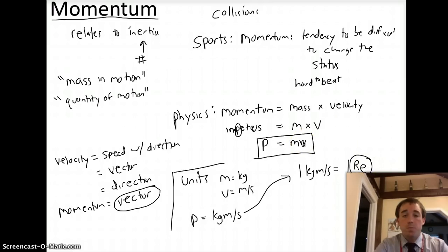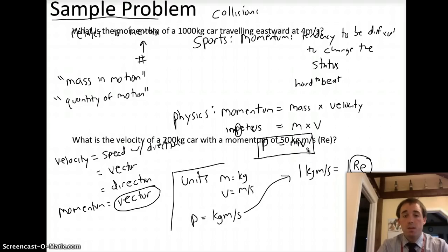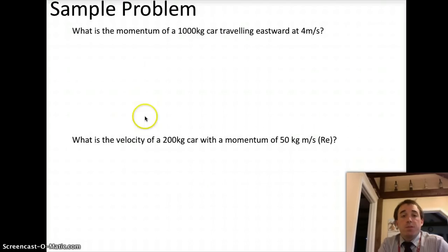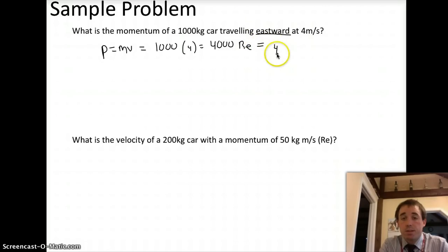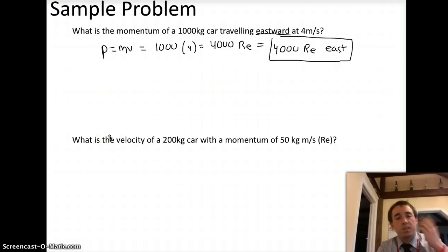So moving along, just using P equals M times V. We have two sample problems. The first, what is the momentum of a car traveling eastward at four meters per second? P equals M times V. 1,000 times 4. That's 4,000 recors. And we have to have eastward. That's our direction. So really, we need 4,000 recors east. That would be my solution. Again, at any point, you need to pause this to copy down the sample problem.